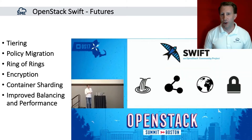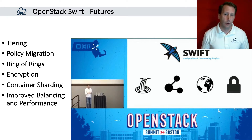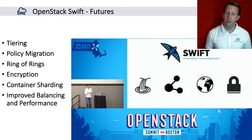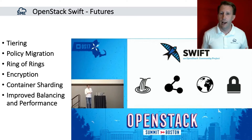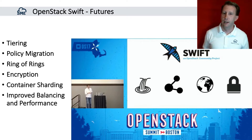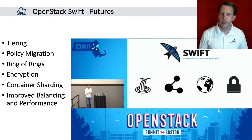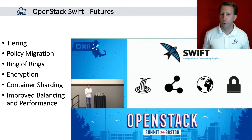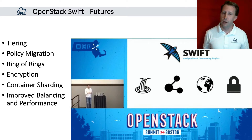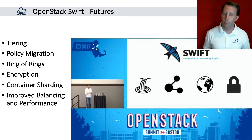What does the future hold for OpenStack Swift, besides improvements to balancing and performance? John teased us with a lot of great futures. First up is tiering and policy migration — the idea that if you currently have a replicated policy and want to tier or migrate data into an erasure-coded policy, that would be available. Next up are improvements to multi-region deployments of OpenStack Swift. OpenStack Swift is eventually consistent and has always been very strong in multi-region deployments, but a new concept called Ring of Rings would give finer tuning of the number of copies to keep in each region, or the ability to have replicated erasure coding.